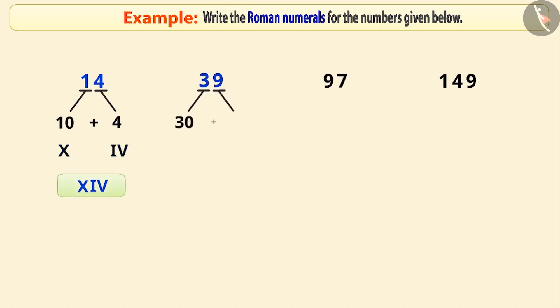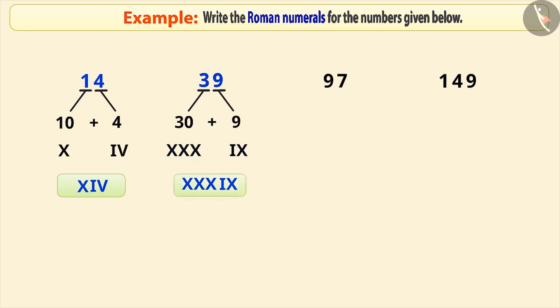39 is equal to 30 plus 9. We write 30 by repeating the symbol of 10 three times, and we write 9 by putting the symbol of 1 to the left of the symbol of 10. Then we write them together.